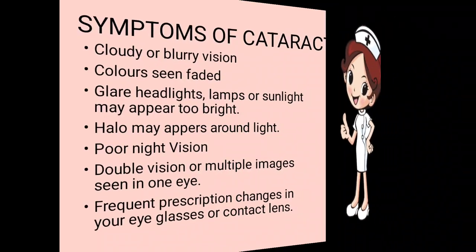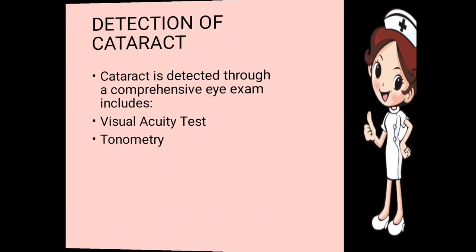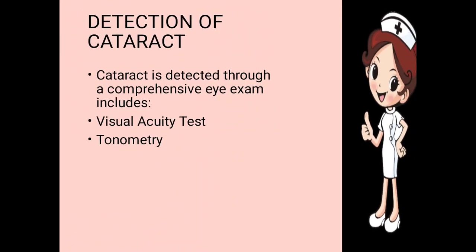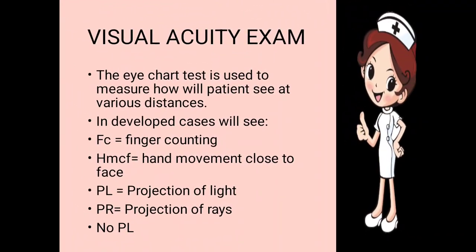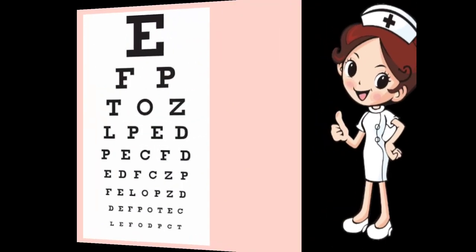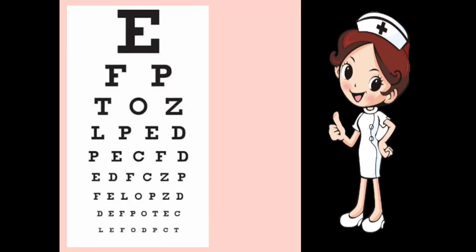Next is the detection of cataract. There are many different tests done to detect cataract. The first is a comprehensive eye exam, which includes visual acuity and tonometry. In the visual acuity exam, an eye chart is used to measure how the patient sees at various distances — normally placed at six meters, or sometimes at three meters so it reflects to six meters.